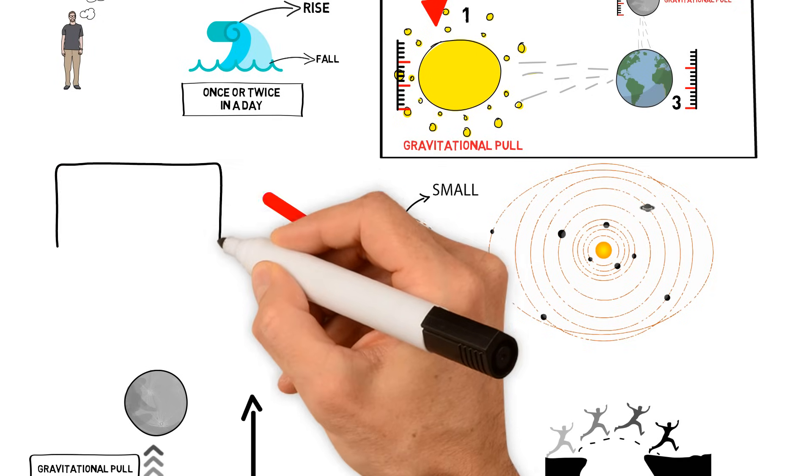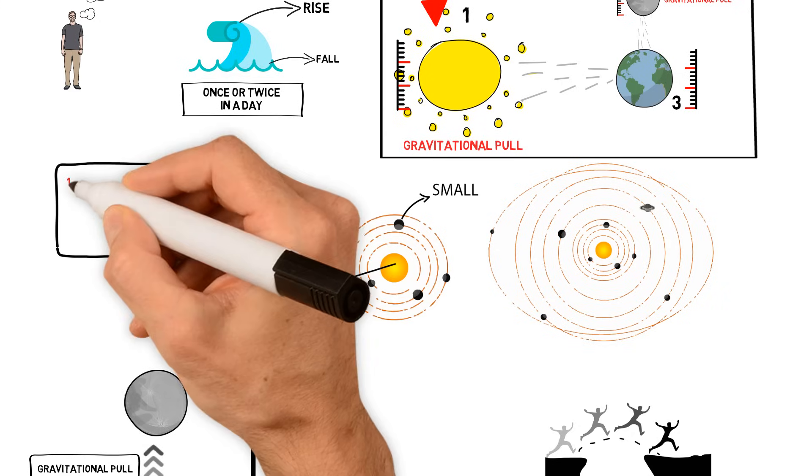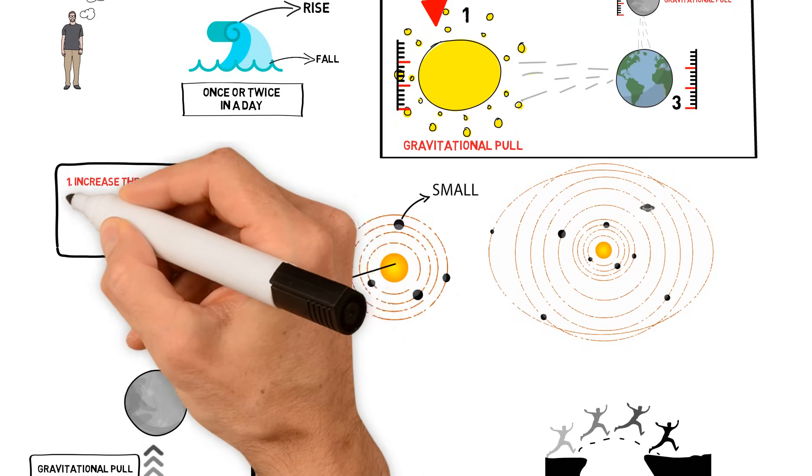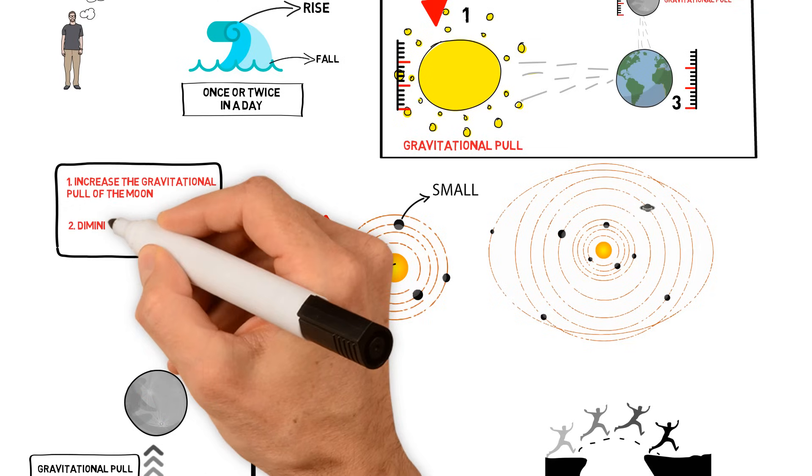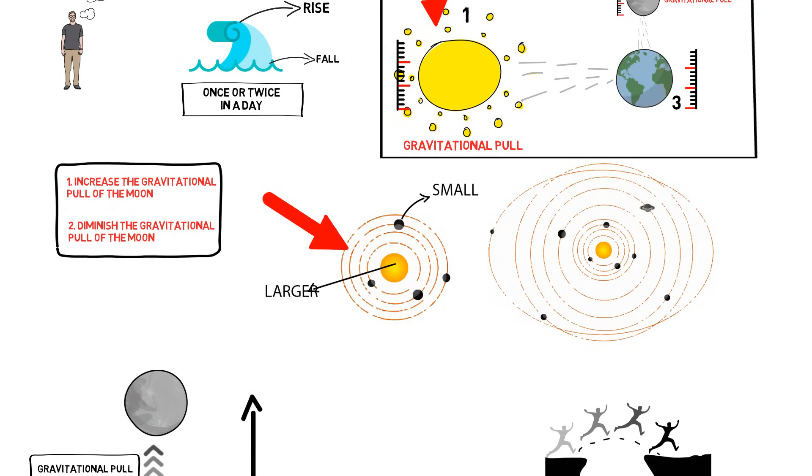However, the sun's gravitational pull can do two things. Either it will increase the moon's gravitational pull on earth, or it will diminish the moon's gravitational pull on earth.